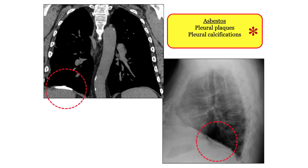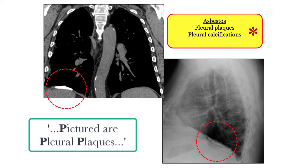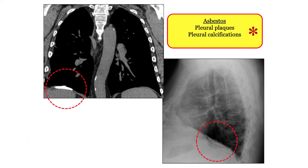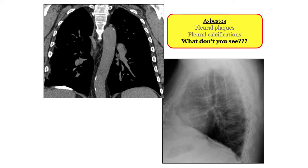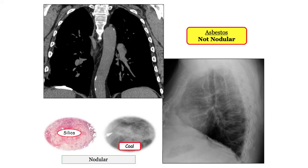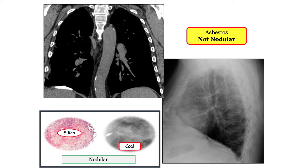Finally, the radiograph in asbestosis: pictured are the characteristic pleural plaques or calcifications. These are specific markers of asbestos-related lung disease, but they themselves carry no specific risk of neoplasm or mesothelioma — simply markers of asbestos exposure. Worth emphasizing what you don't see: nodules. Both coal and silica may present with nodular disease; asbestos does not.